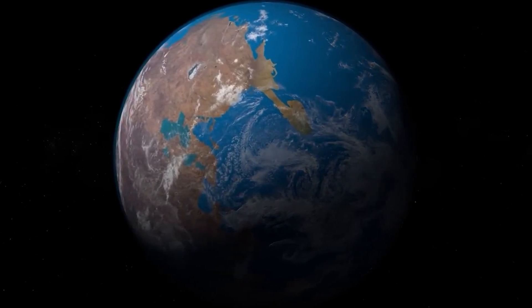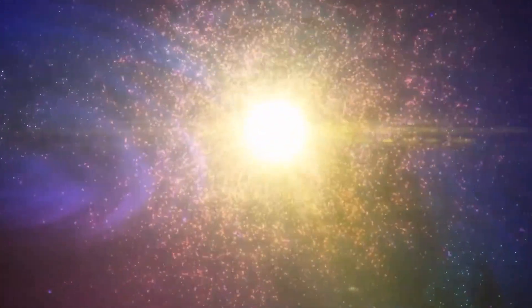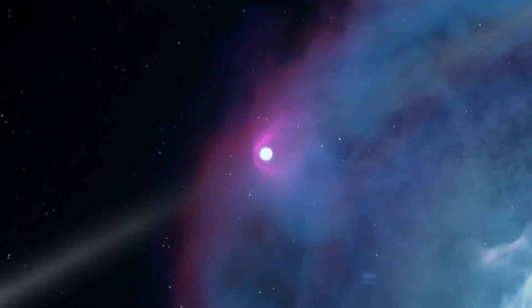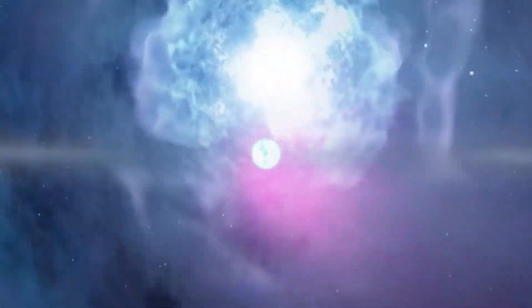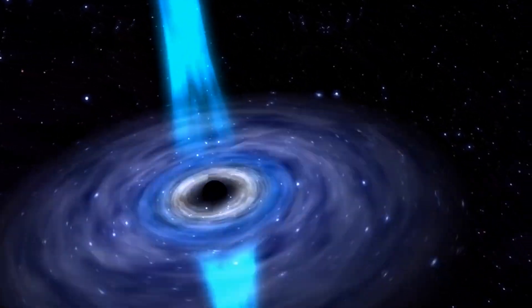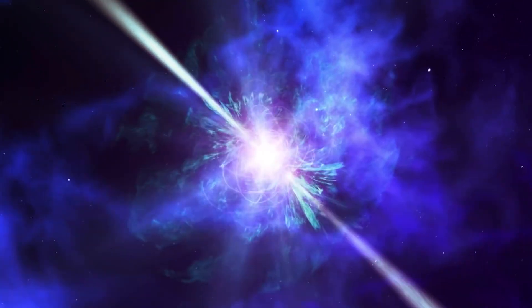From vantage points like Earth's, pulsars give the impression of flickering on and off in the night sky repeatedly, despite emitting a constant stream of light. The reason why some neutron stars spin while others do not remains uncertain.